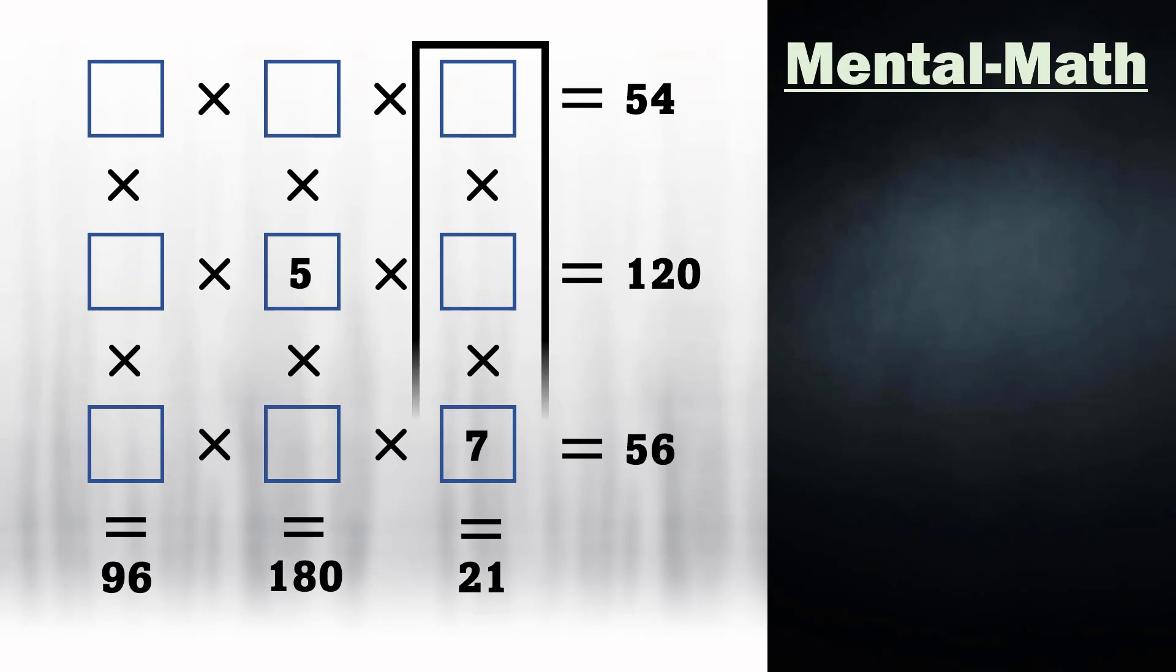Now consider this column with product 21. 7 times 3 gives 21. So the number 3 must be present in one of these two squares. And now it's obvious that the other number in this column must be 1.